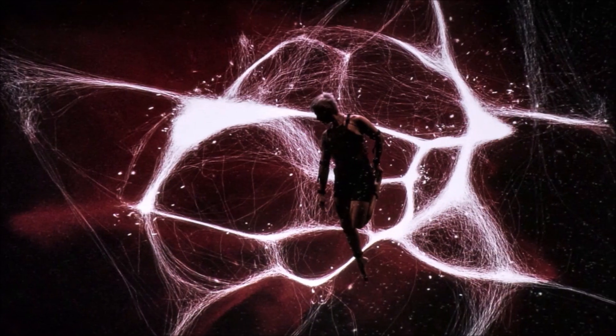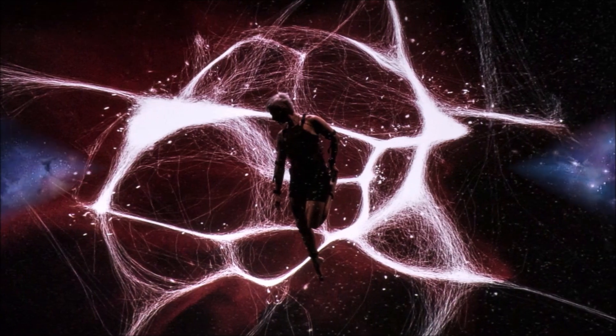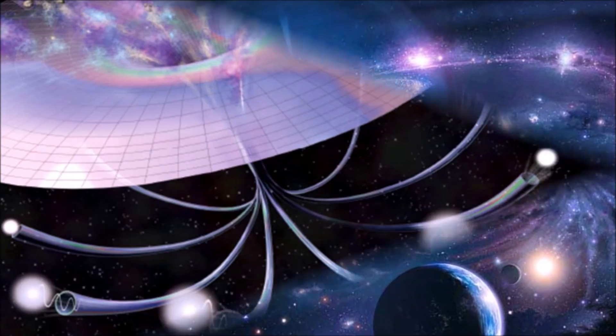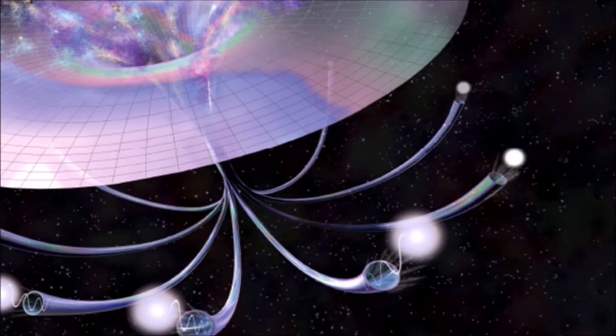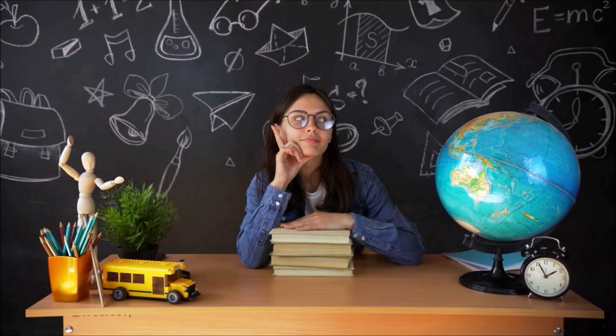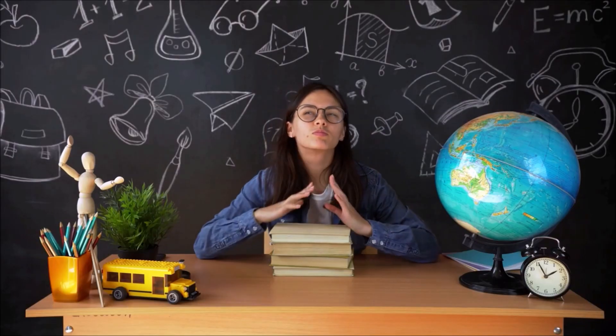But according to the Super String Theory, one of the leading theories today to explain the nature of our universe, there are actually 10 dimensions, that's 9 of space and 1 of time. So what are these other dimensions and how might we experience them?